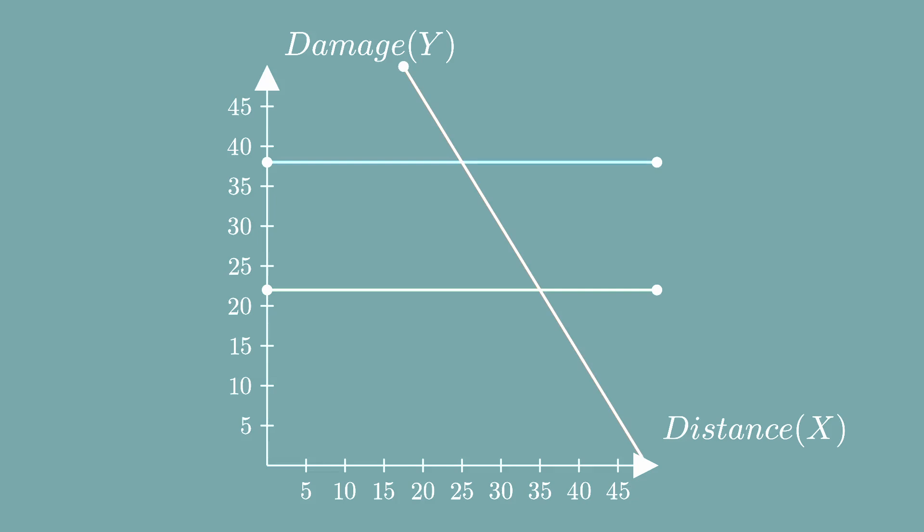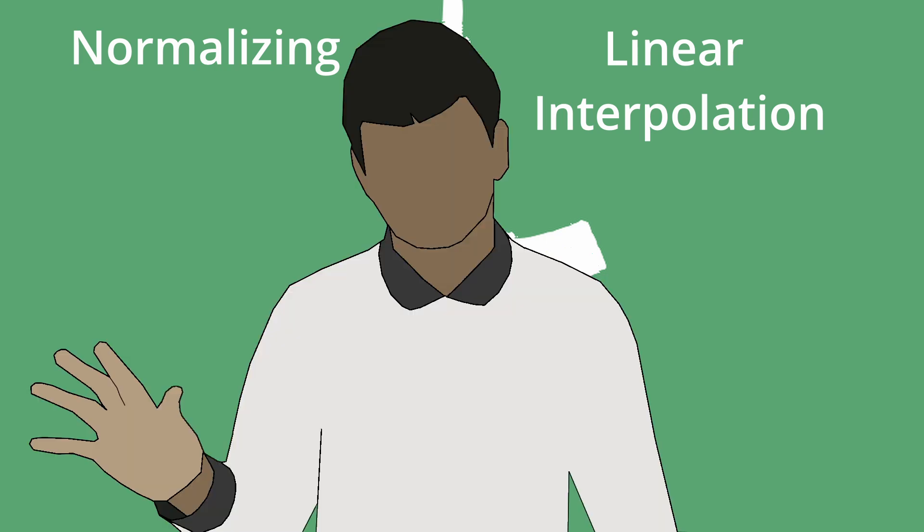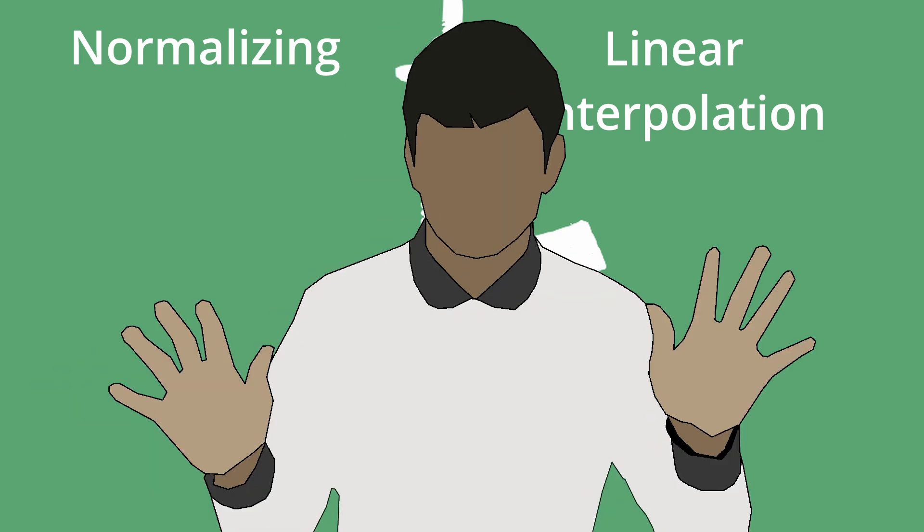What we did was we basically found the equations of the lines that make up this graph and bound it. The issue is, if you want to adjust the gun a bit, like make it do less damage from a certain range, you have to recalculate this line again, which can be a pain. There is a much better way to do this. That way is normalizing and linear interpolation. These methods may sound scary, but like before, I'll explain it.